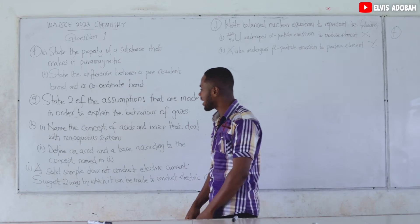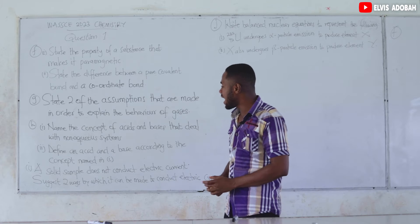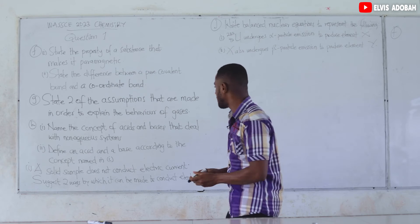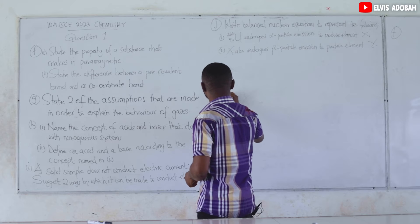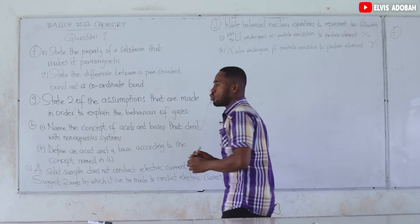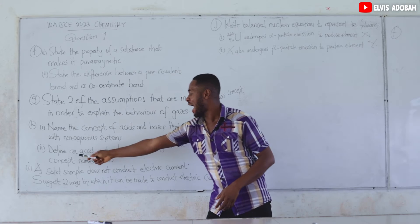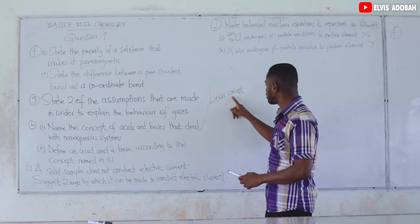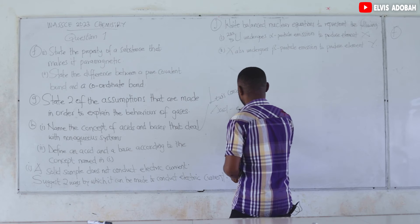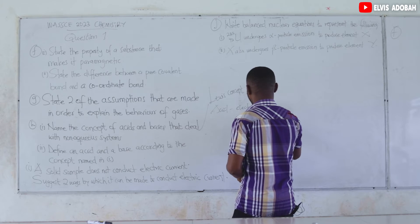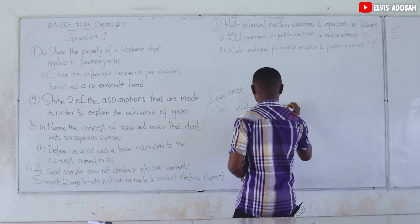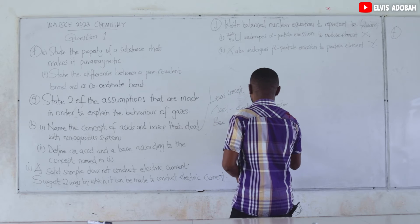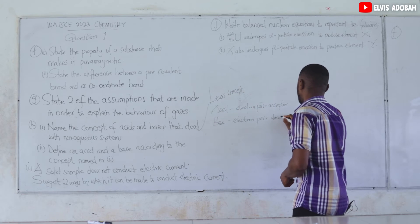Question 1H, part one: name the concept of acids and bases that deals with non-aqueous systems. That would be the Lewis concept. Part two: define an acid and a base according to the Lewis concept. According to the Lewis concept, an acid is an electron pair acceptor, whereas a base is an electron pair donor.